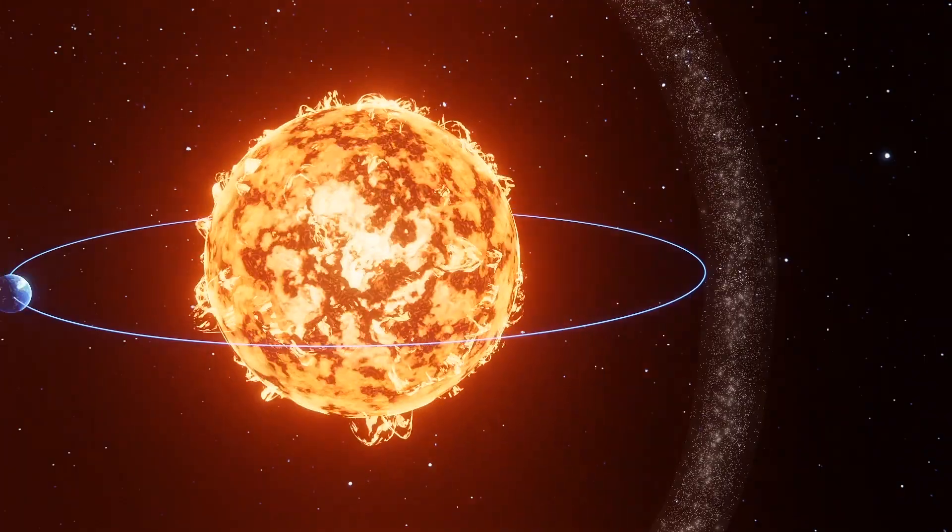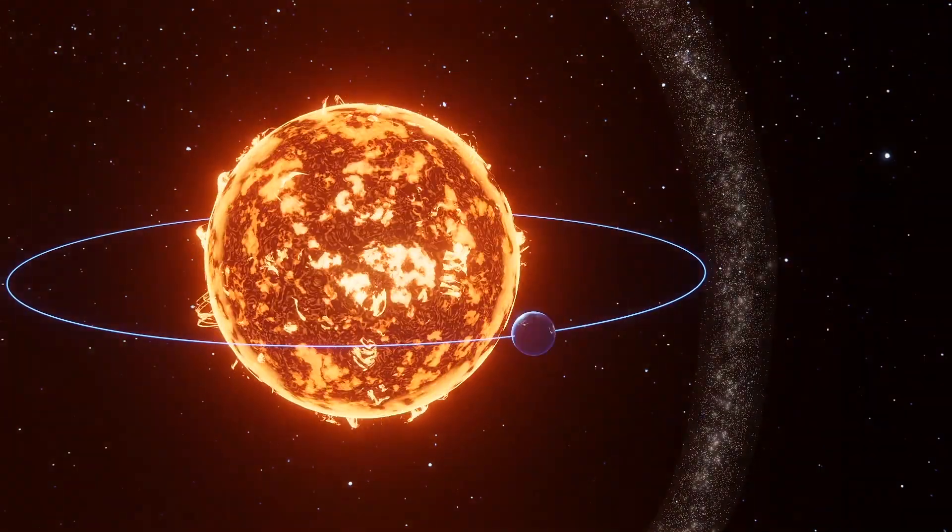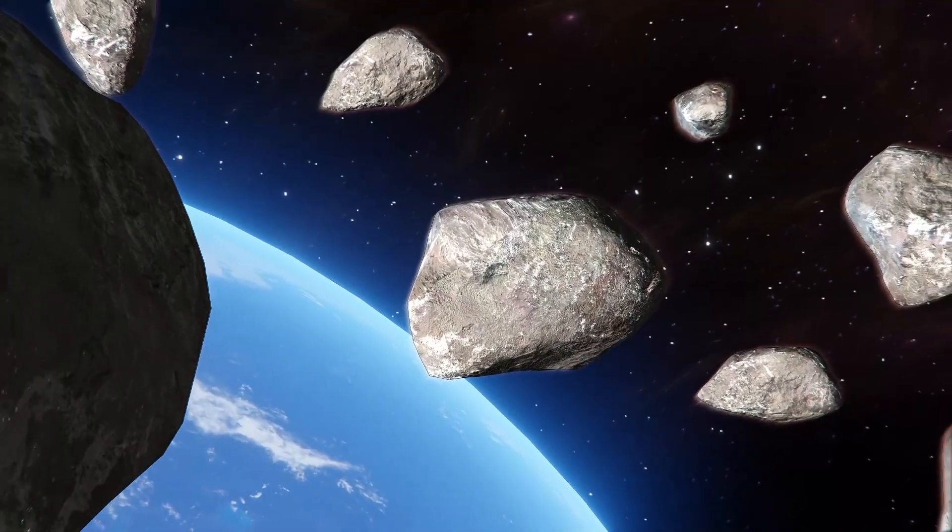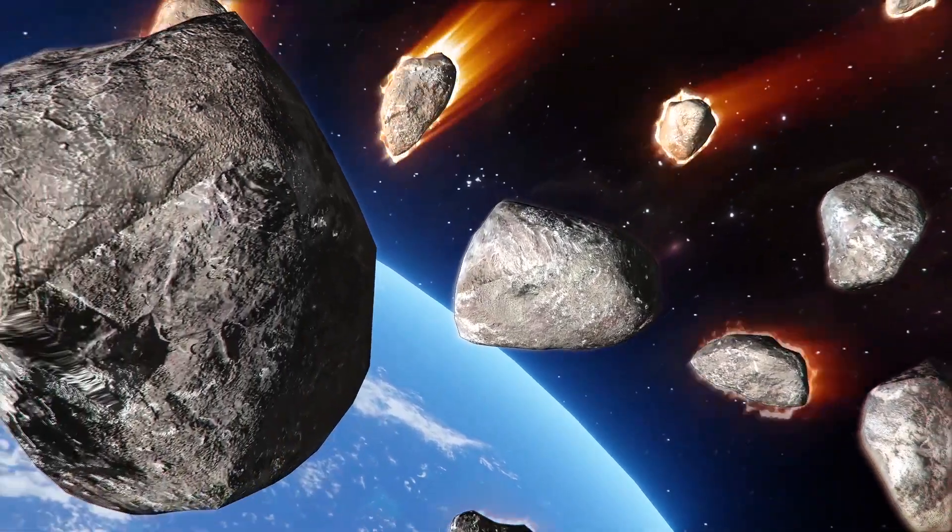The Earth crosses Swift-Tuttle's debris field in August every year. When fragments of the comet fall into the atmosphere, they burn up and become meteors.